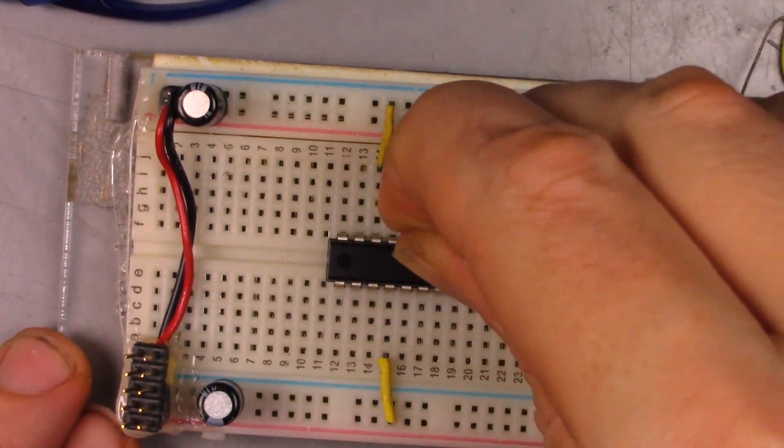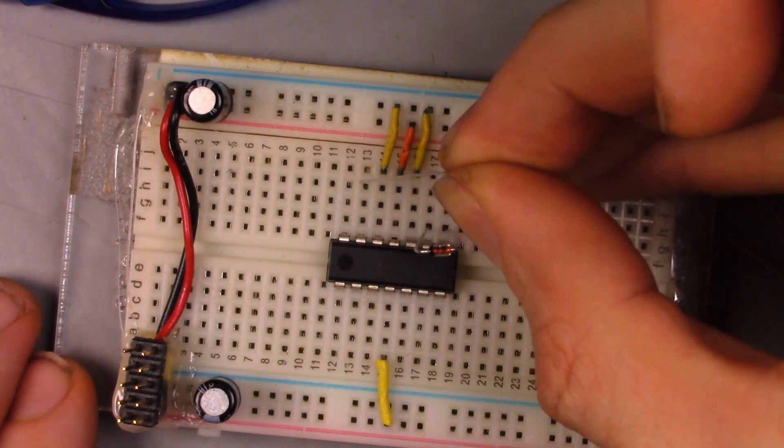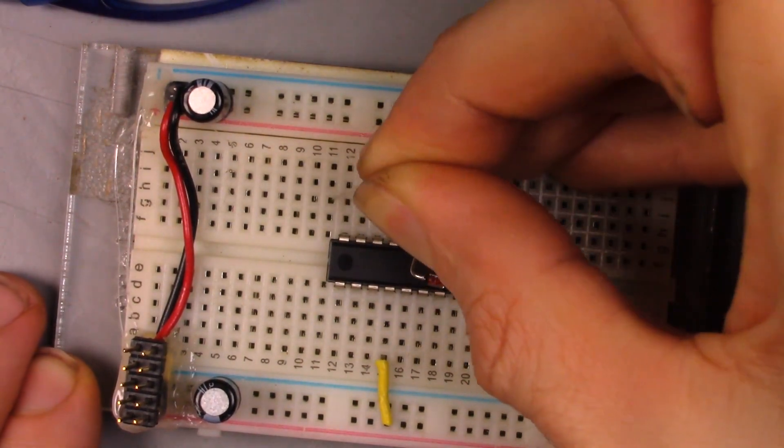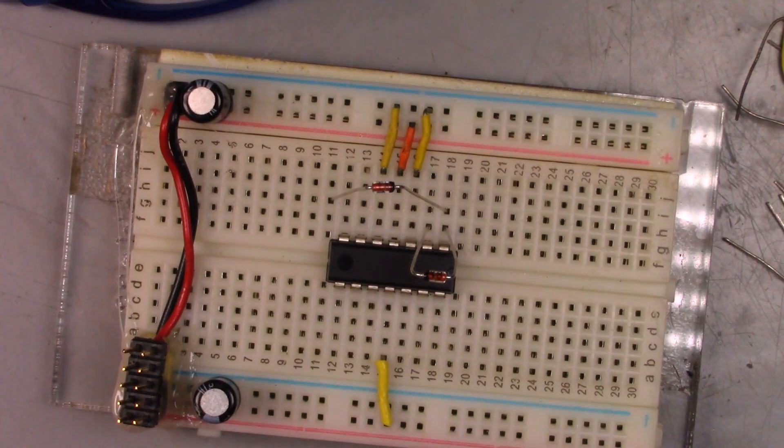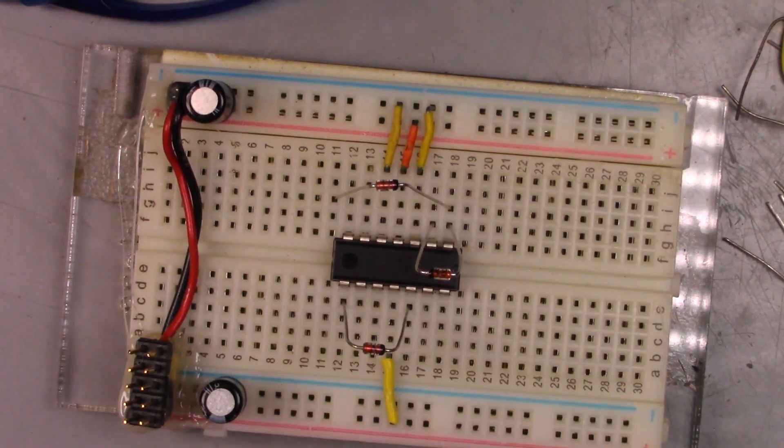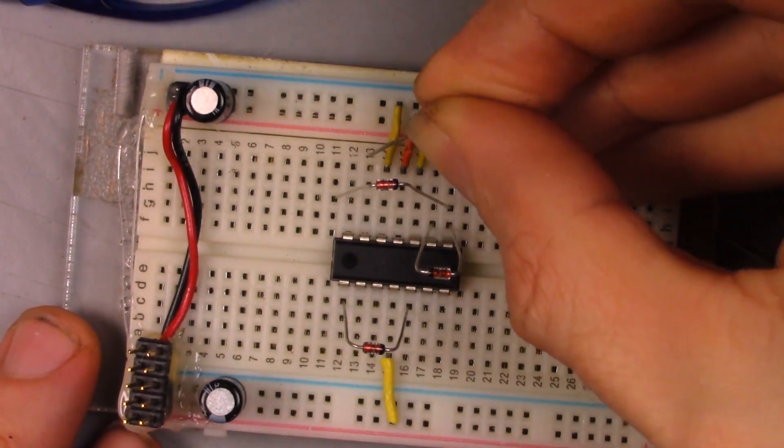Diodes, note the polarity. Now the 10K resistors.